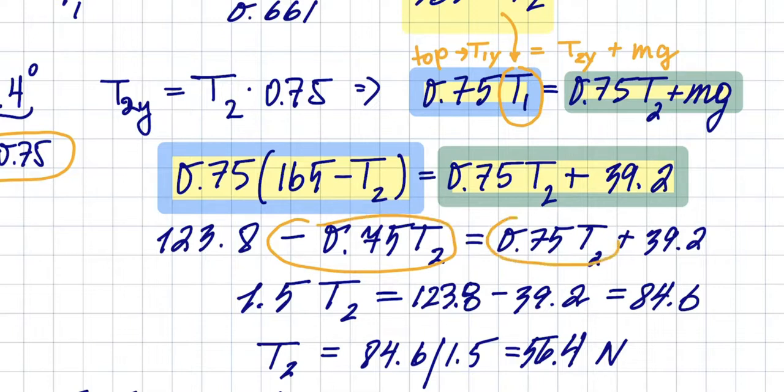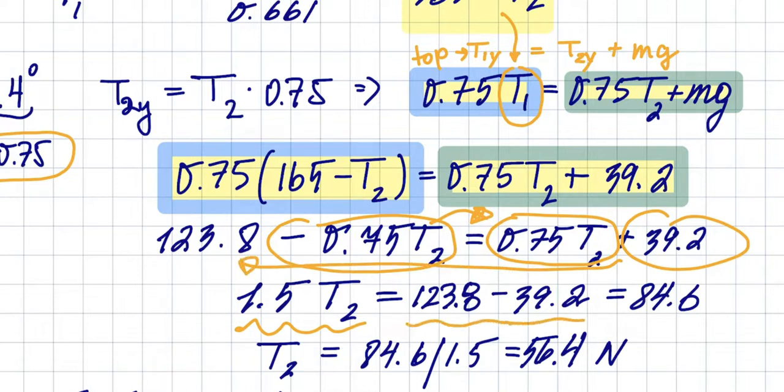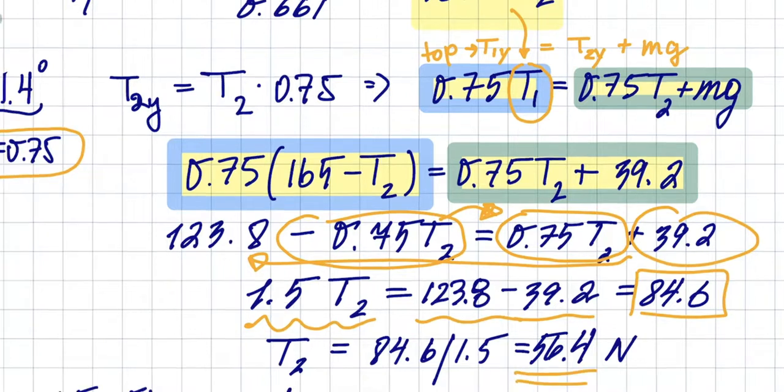So I just put this over here—grab that, put it to the left with a minus—that gives me 84.6, and then divide by one and a half, that gives you 56.4. And like I said, after that, if you subtract 56 from 165, that was—